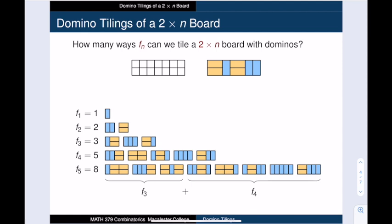Well, the first three tilings actually start with an F₃ tiling, followed by two horizontal dominoes. And the last five tilings start with an F₄ tiling, followed by one vertical domino. So, we've categorized the tilings according to the last domino that we see. Is it horizontal or vertical?